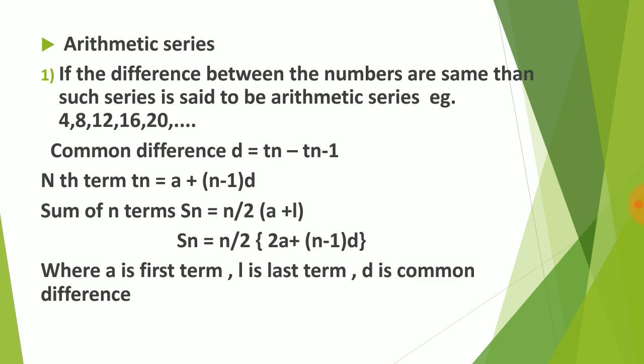An arithmetic series is one in which the common difference is the same, calculated as tₙ minus tₙ₋₁. The nth term is given by tₙ = a + (n − 1)d. The sum of n terms is Sₙ = n/2 × (a + l), where a is the first term and l is the last term. Another form is Sₙ = n/2 × [2a + (n − 1)d].